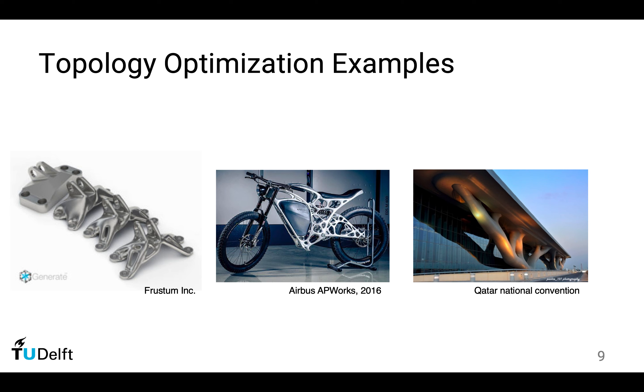For instance, on the left-hand side, you see a bracket in an airplane. By using topology optimization, the mechanical weight is reduced significantly while not sacrificing the mechanical performance.